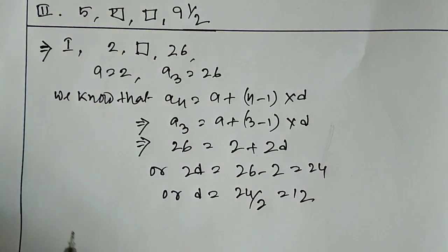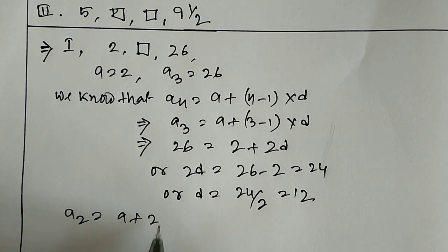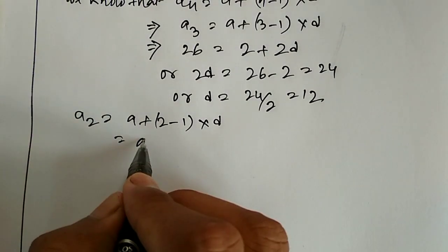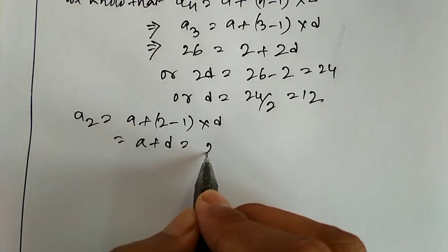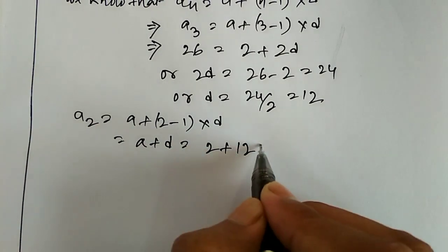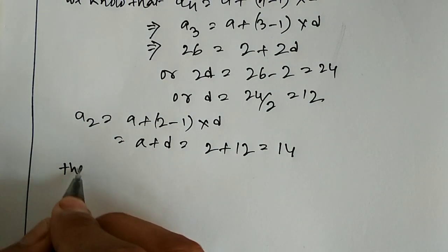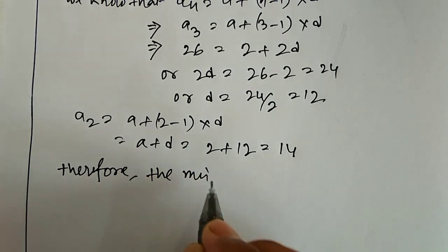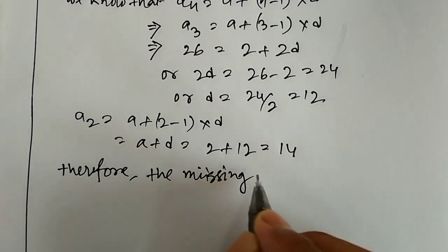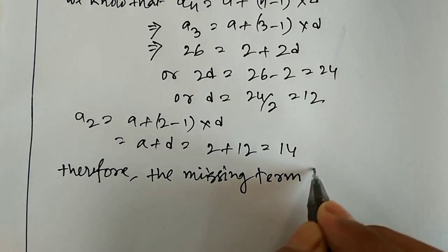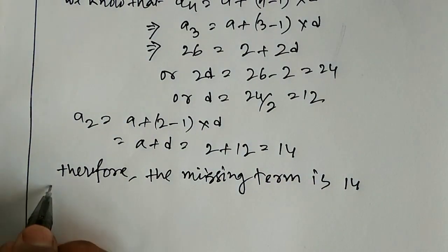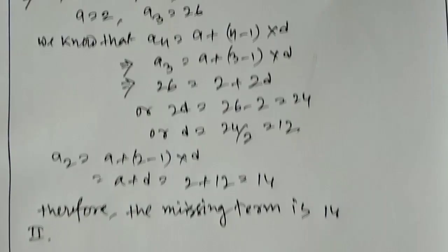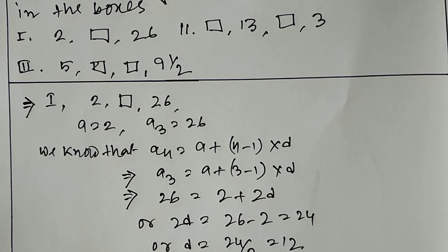Now we have to find the second term. So a2 equals a plus (2 minus 1) into d, which means a plus d. Since a equals 2 and d equals 12, a2 equals 14. Therefore the missing term is 14.